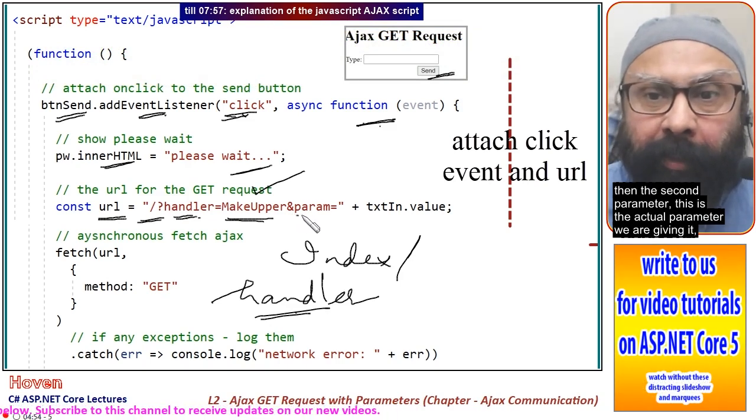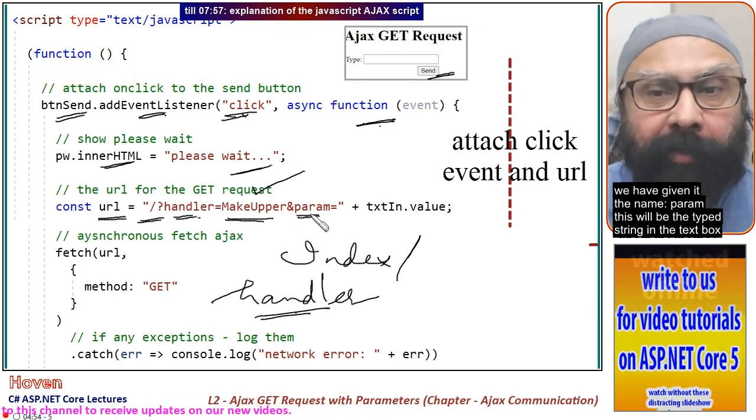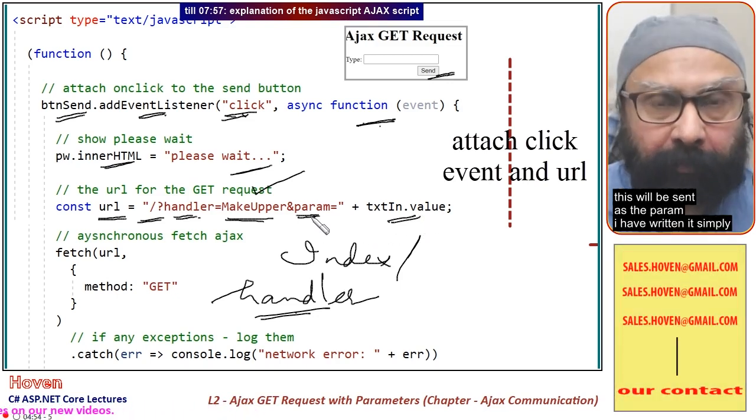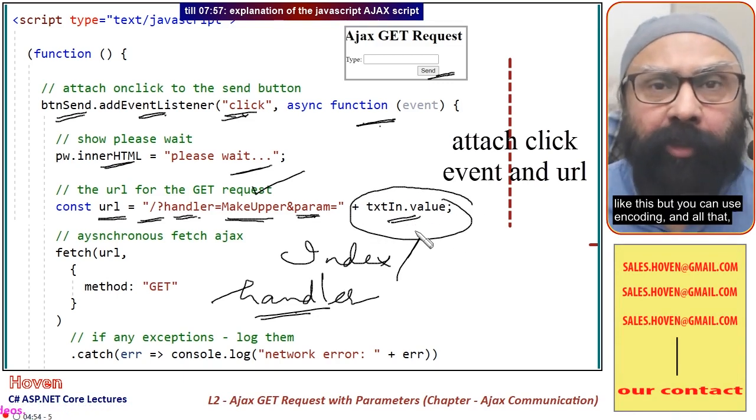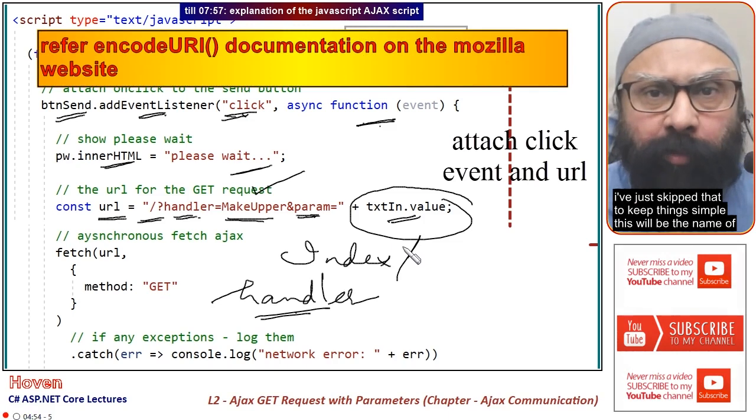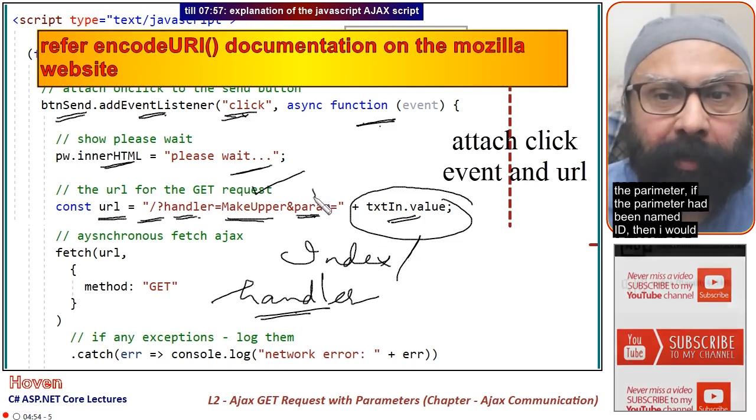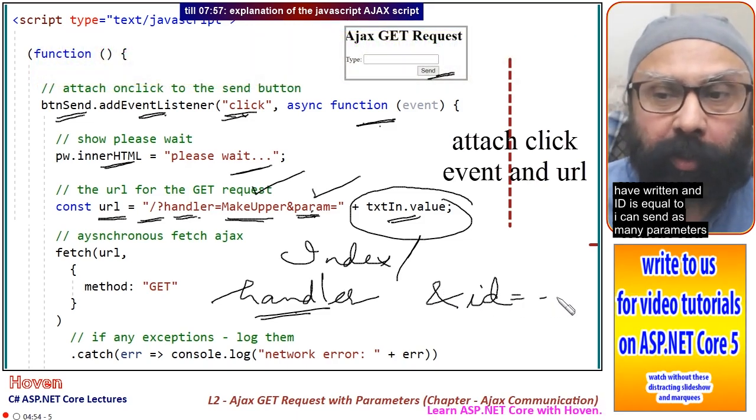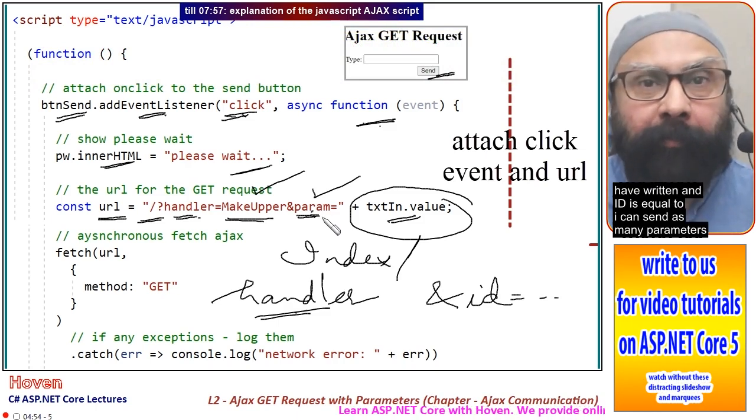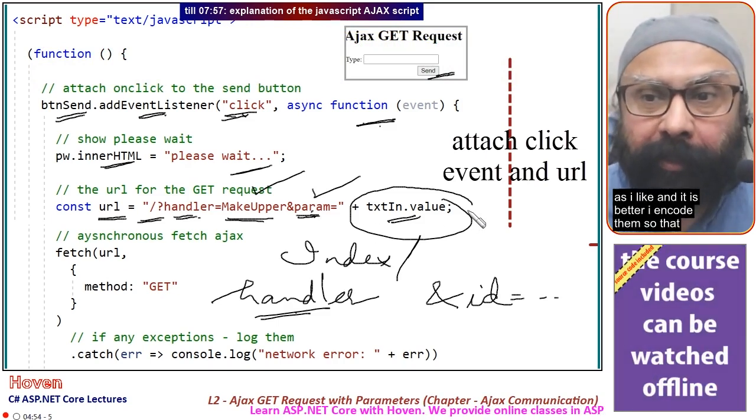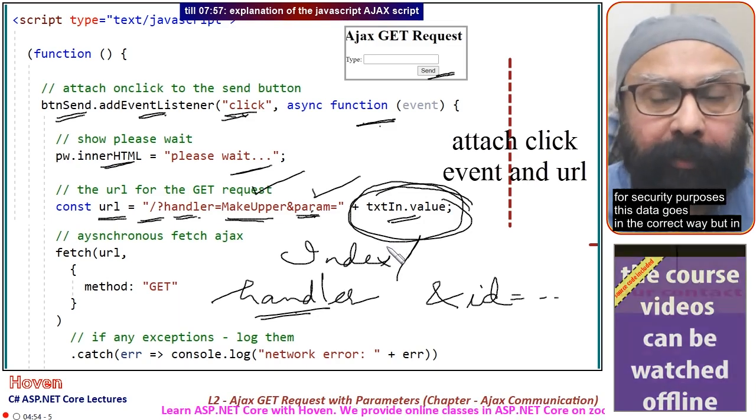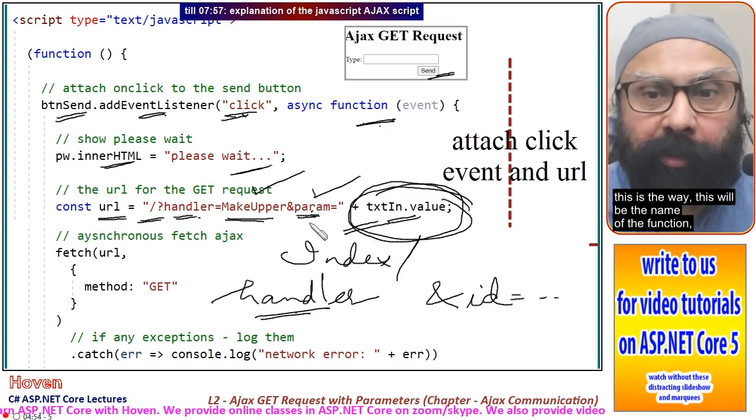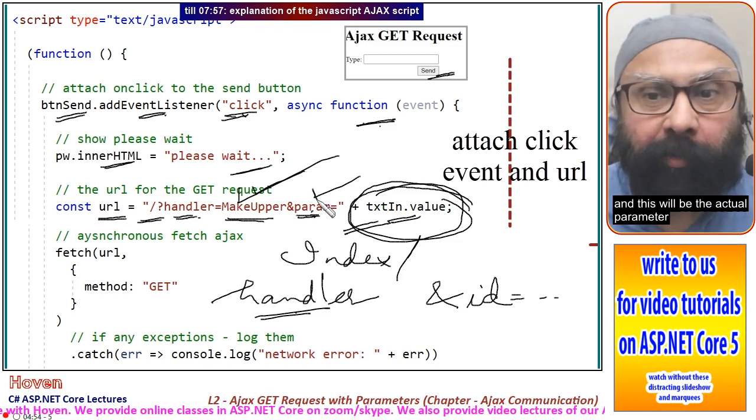Then the second parameter is the actual parameter. We've given it the name param, which will be the typed string in the text box. I've written it simply without encoding to keep things simple. This will be the name of the parameter. If the parameter had been named id, I would have written id equals. I can send as many parameters as I like, and it's better to encode them for security purposes.